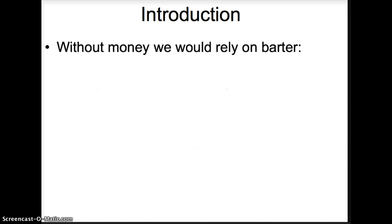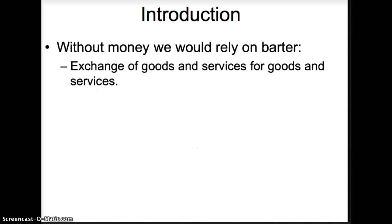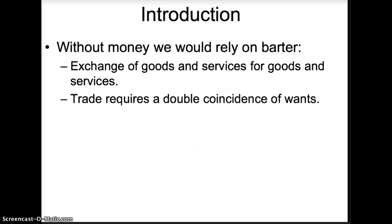If we did not have money in the economy, we would have to rely on barter. Barter is the exchange of goods and services for goods and services. Barter is relatively easy when we were kids trading game boys or clothes with siblings. However, barter is much more difficult in a market economy because trade requires a double coincidence of wants — both traders have to have something the other person wants.